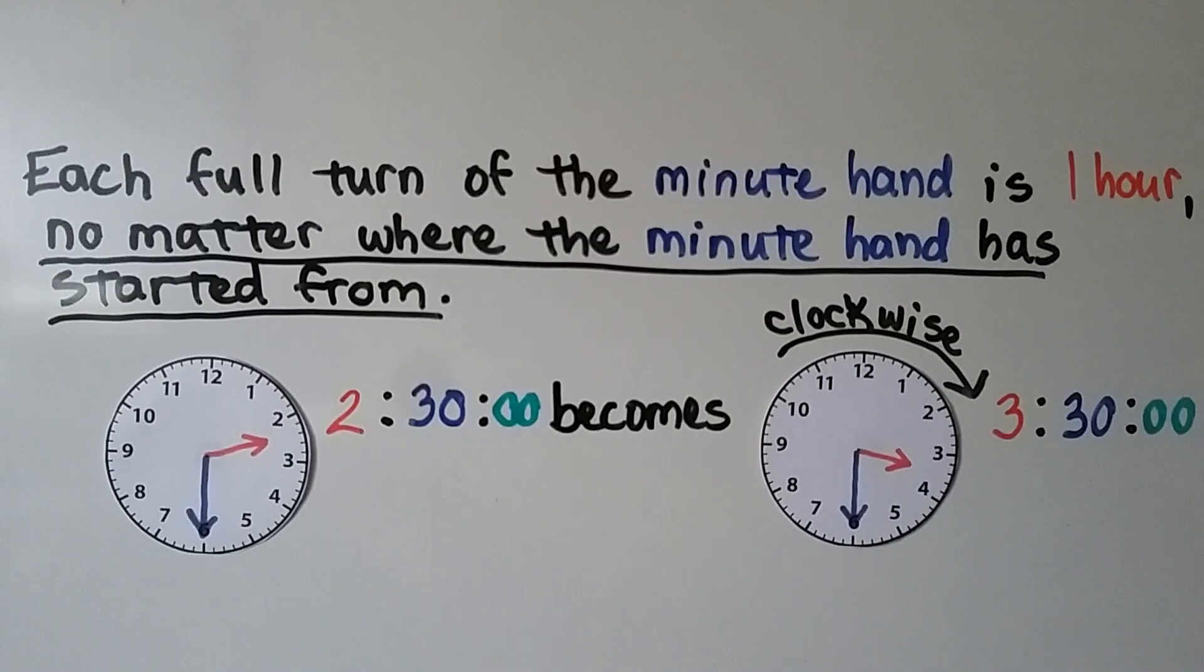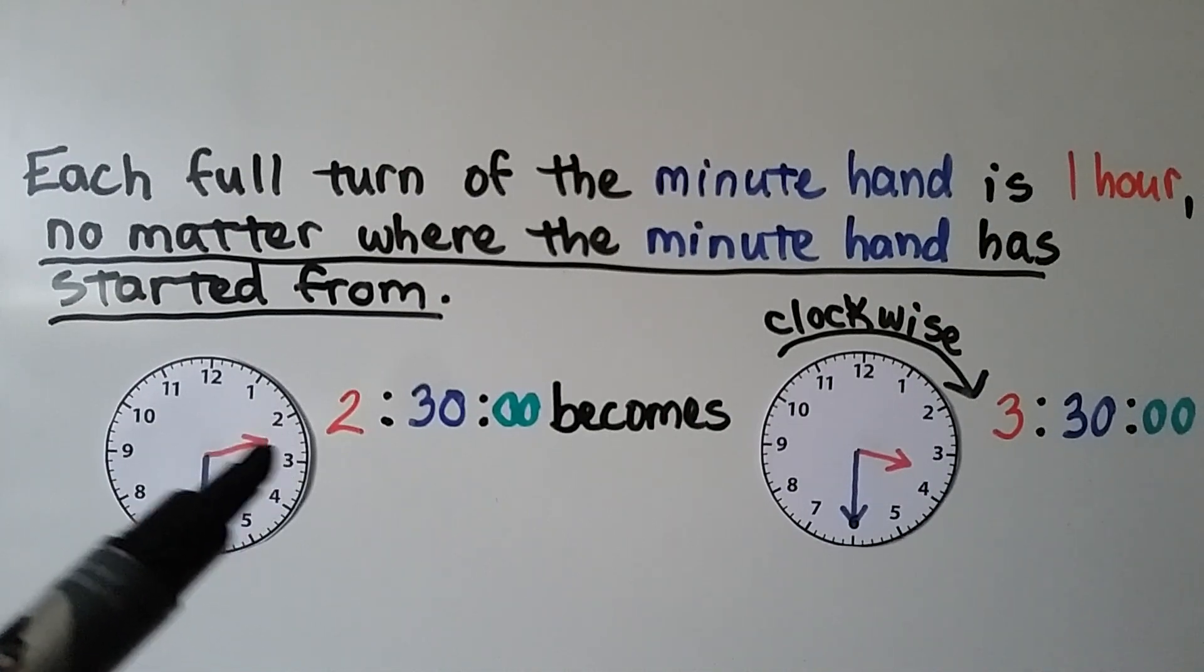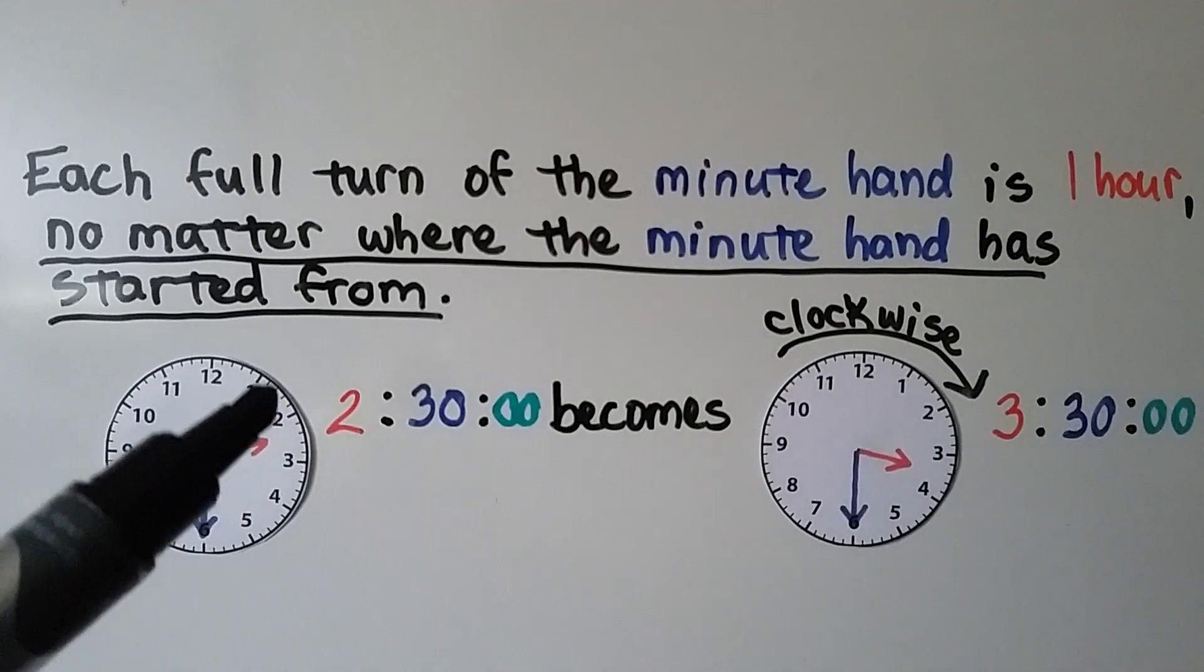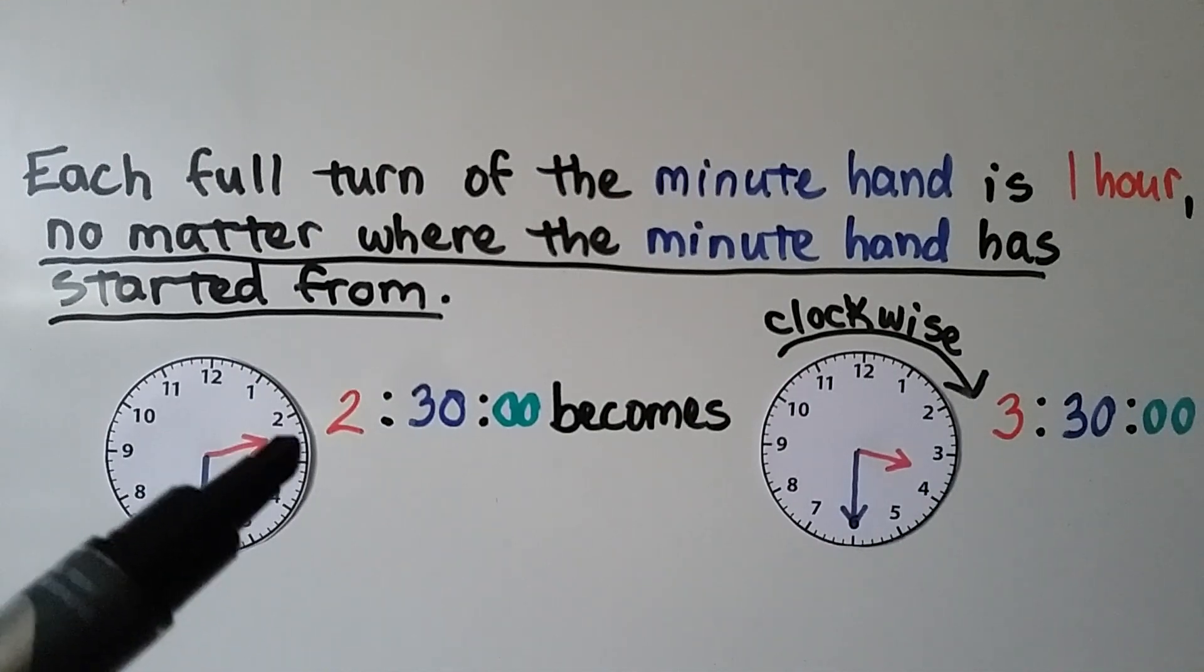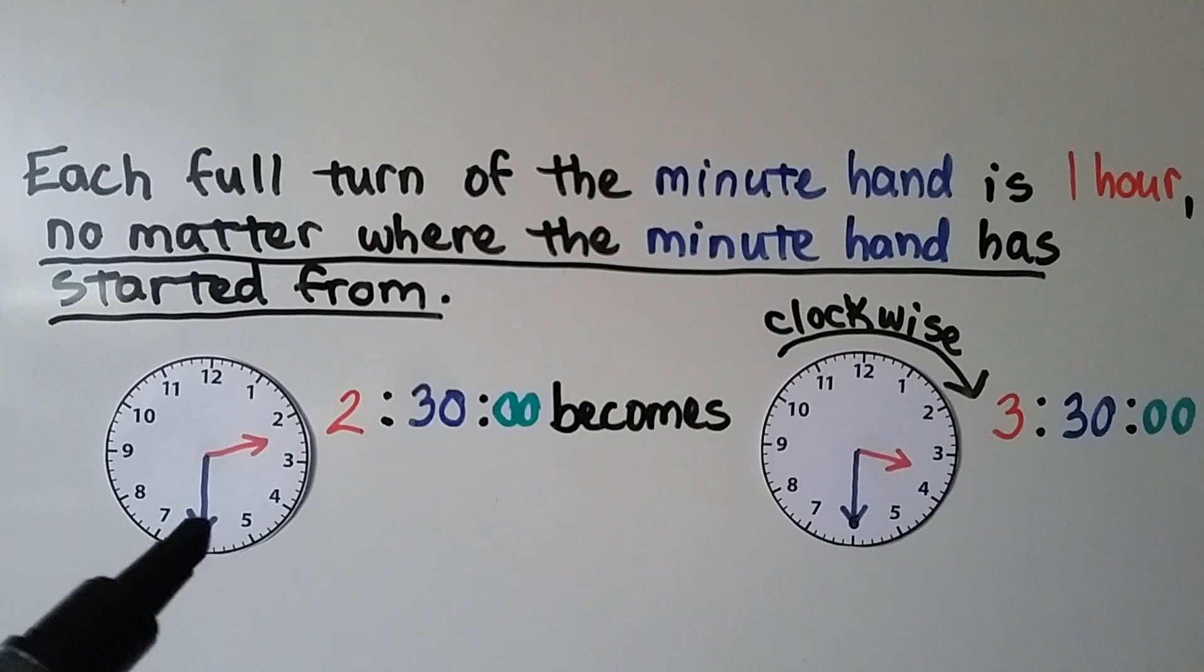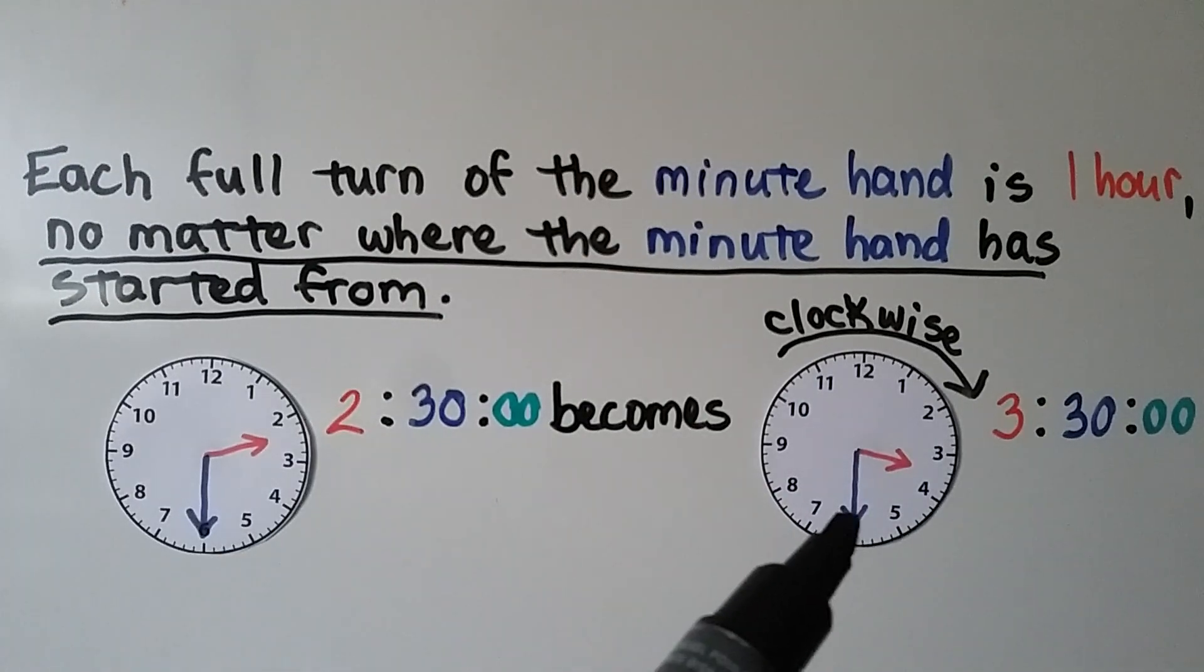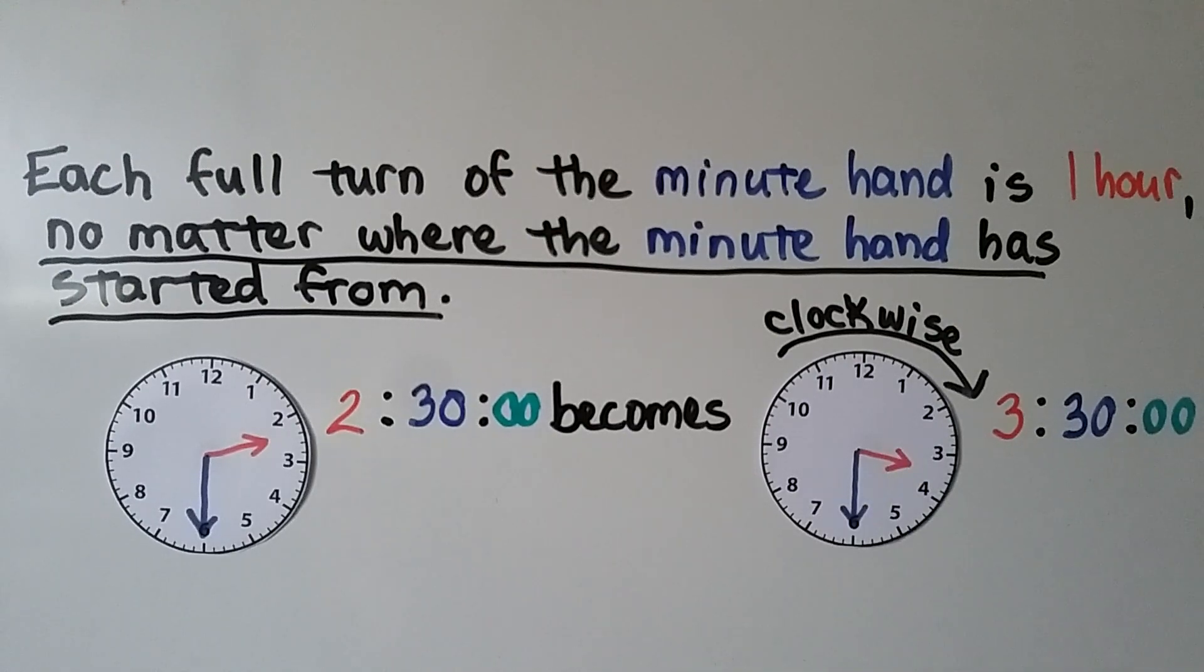Each full turn of the minute hand is 1 hour, no matter where the minute hand has started from. This is 2:30. We see the hour hand is in between the 2 and the 3, so it's not 3 yet. It's still in the 2's. Because the minute hand goes around one full time, then the hour hand moves in between the 3 and the 4, it's now 3:30.